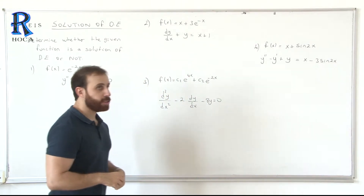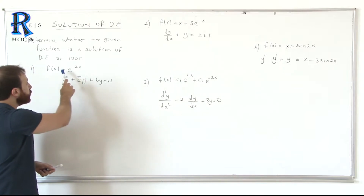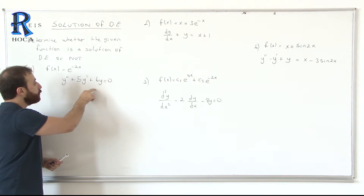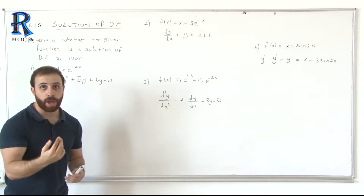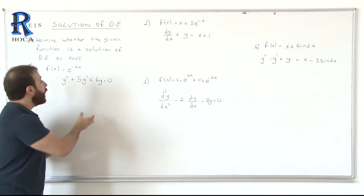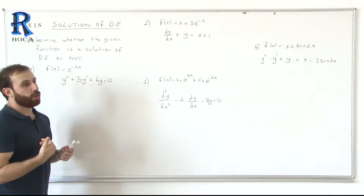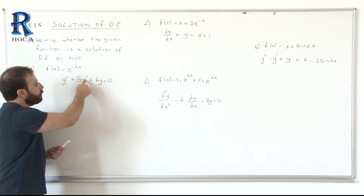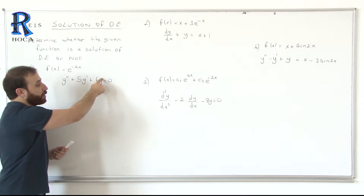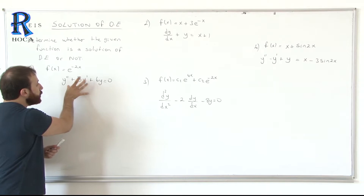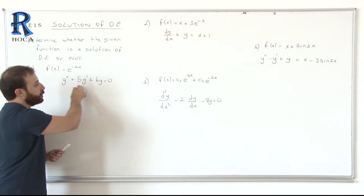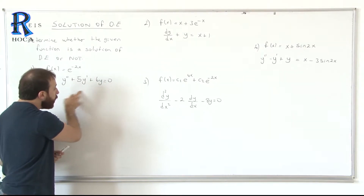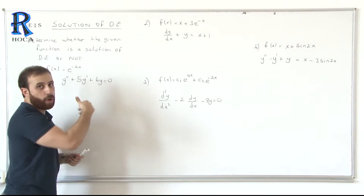The first question asks whether the function f(x) = e^(-2x) is a solution of this differential equation or not. We will use that function for this differential equation. What we need for this differential equation is the second order derivative, first order derivative, and the function. We will put this information into the equation and check if the right hand side equals 0.